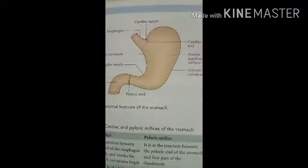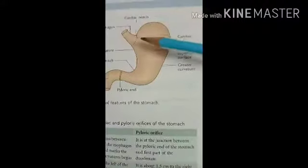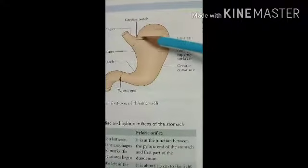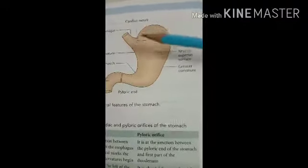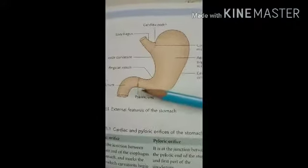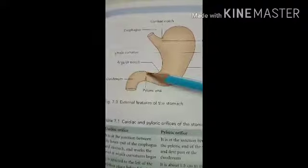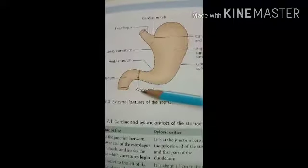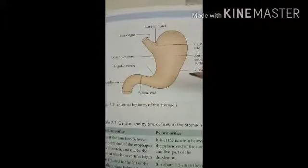The cardiac orifice is present at the junction of the esophagus and the stomach, behind the seventh costal cartilage, and at the vertebral level of T11. The pyloric orifice is present between the stomach and the duodenum, at the level of the lower border of the L1 vertebra, also known as the transpyloric line.